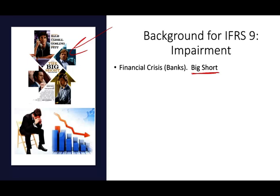What happened is this: during the financial crisis, banks incurred large losses suddenly. Banks are in the business of lending money — they lend money to people who are buying homes. You're supposed to make payments on that home; you pay the bank interest and principal. If you cannot pay your interest and principal, the bank will incur a loss. I'm sure you are familiar with bad debt expense.